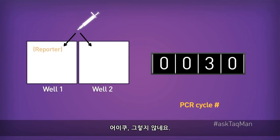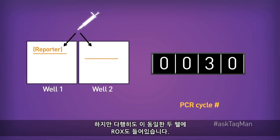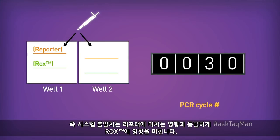I expect those two readings to be identical, since I started with the same reaction components. Unfortunately, they're not, due to a system inconsistency between these two wells. Relatively speaking, these measurements are incorrect. Fortunately, we also have ROX in these same two wells, and like the reporter, it's also being measured. And look — it's actually shadowing the reporter.